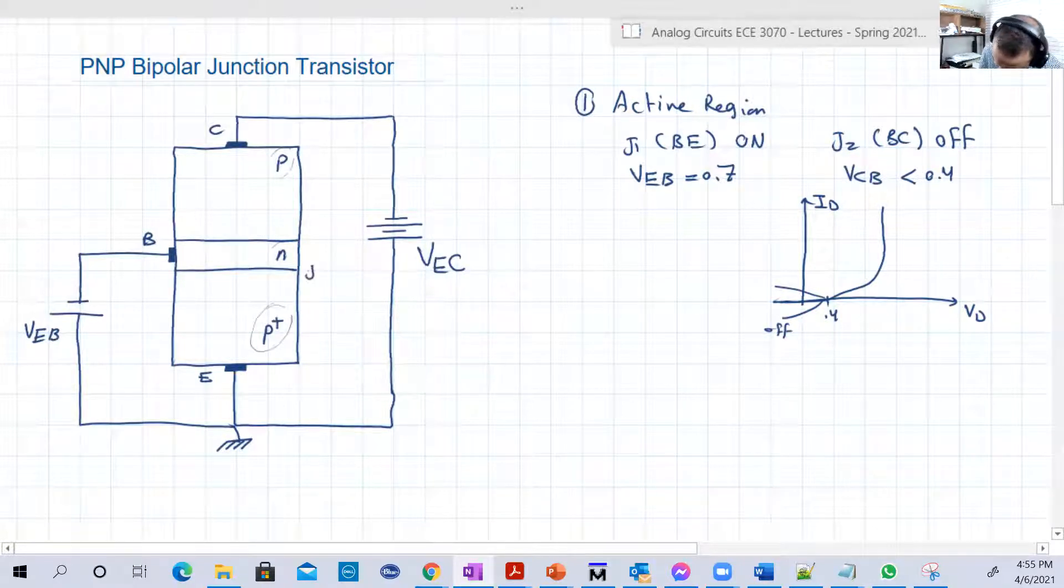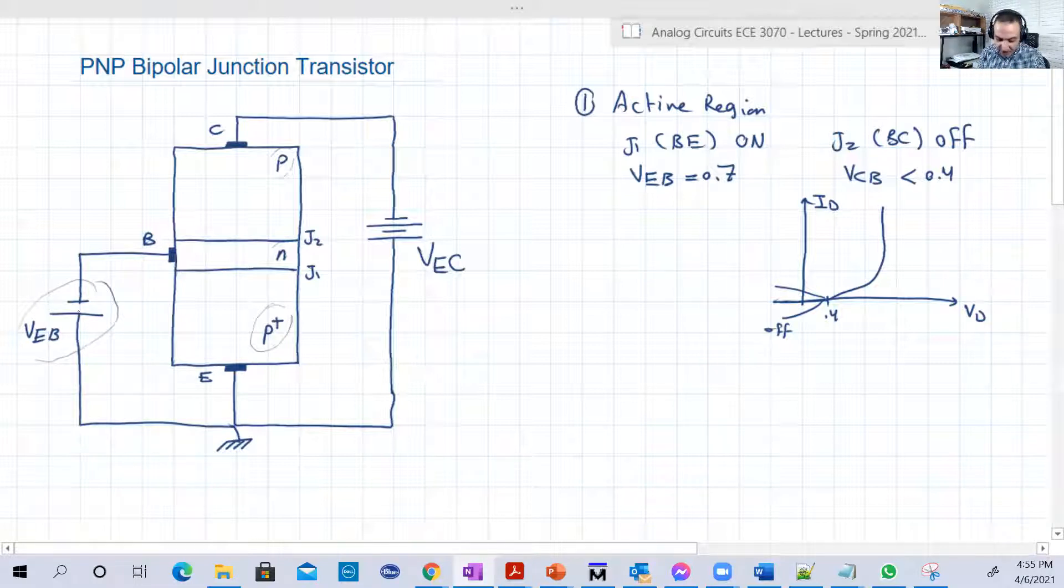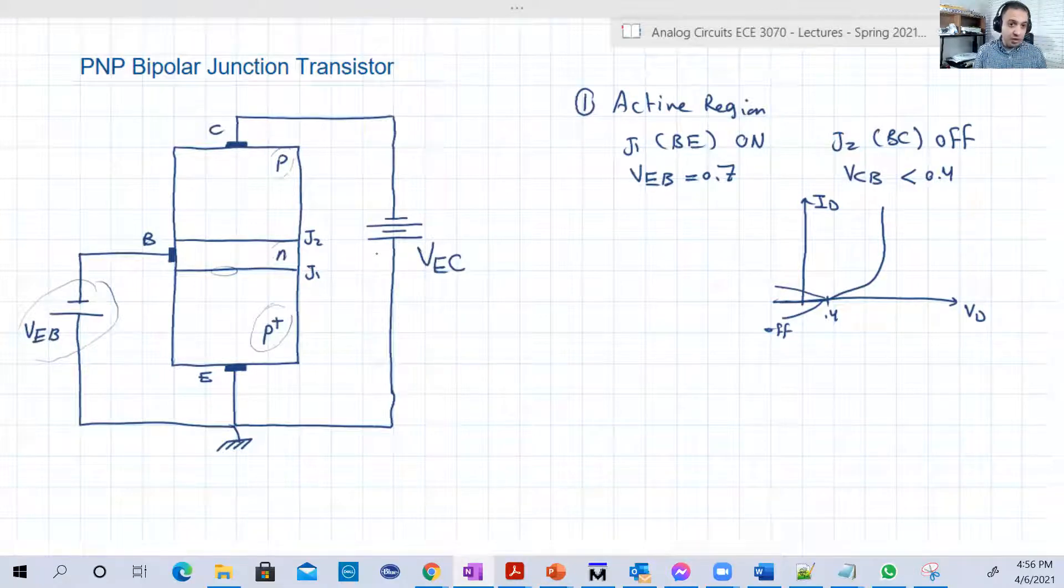Here is J1, here is J2. And look at the batteries, they are flipped as well. So VEB is in that way so that J1 should be forward and on. And VEC between the collector and emitter is in that way so that the junction between the base and the collector can be controlled to be off.